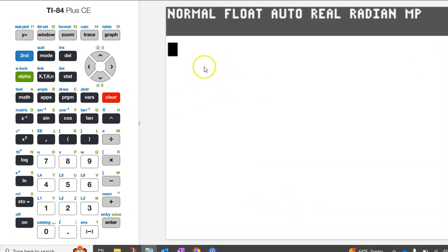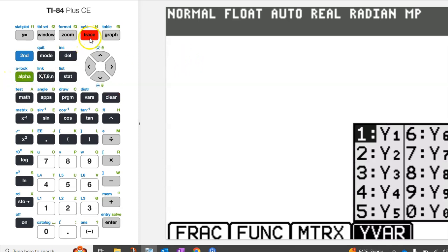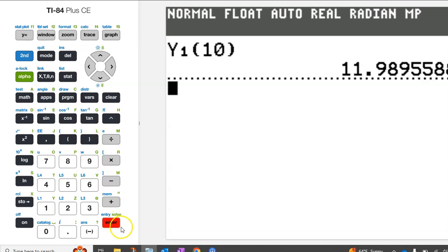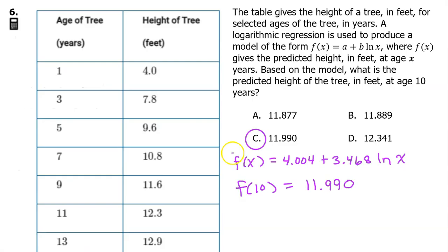We have asked the calculator to store the regression model in y1, so we need to evaluate y1 at 10. Again, a quick way to make y1 appear on the calculator is alpha trace enter. To evaluate y1 at 10, simply put 10 in parentheses right next to it and hit enter. So, 11.989 if you truncate or 11.990 if you round. So, the answer is C.